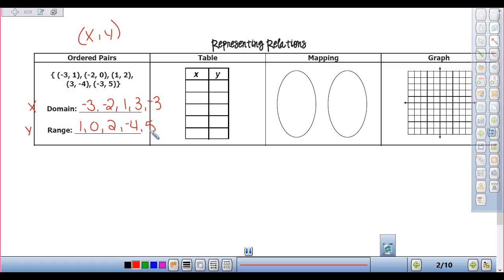Our relations can be written in three different ways. We can write them as ordered pairs. They can be written as a table. So if I write these ordered pairs as a table, we just write what goes with what. I use my first ordered pair. So I go negative 3 and 1. The next row is negative 2 and 0, 1 and 2, 3 and 4, and negative 3 and 5. Table is easy, right?